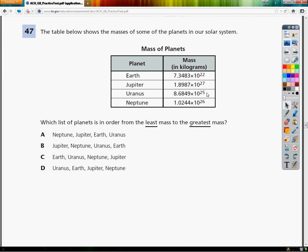Earth, Jupiter, Uranus, and Neptune. I thought I was going to say it the other way, didn't you? Which list of planets is in order from least mass to greatest? That would mean littlest to smallest.